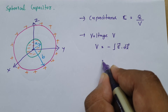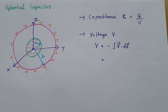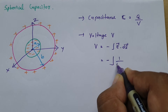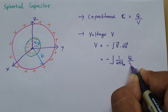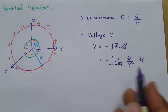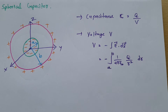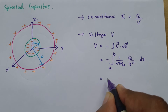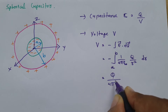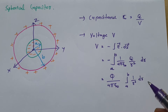What is the electric field due to a spherical shell? If you see my session on electric field for a spherical shell, I have already explained that the electric field is (1/4πε₀)(Q/r²) in the r̂ direction, and dl is dr. The radius range is from a to b, so we integrate from a to b.